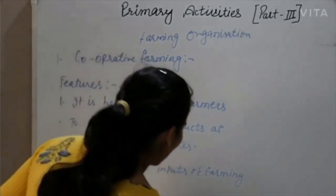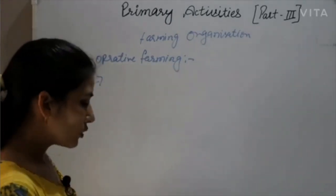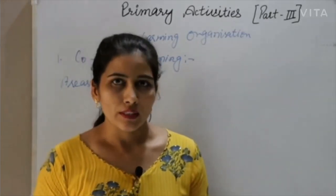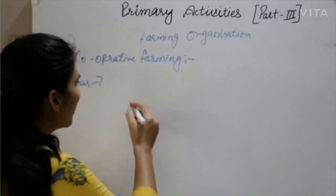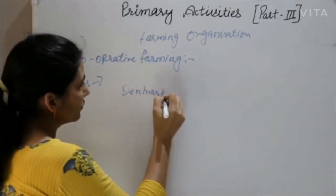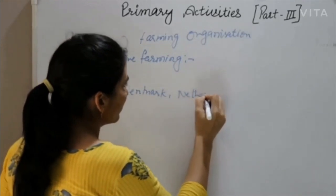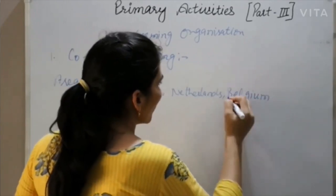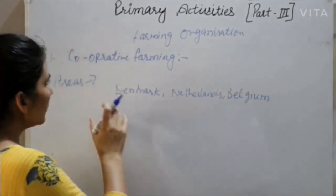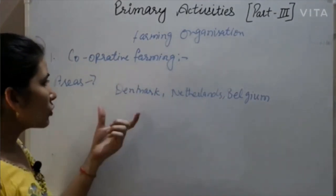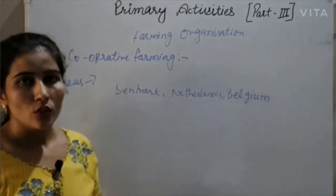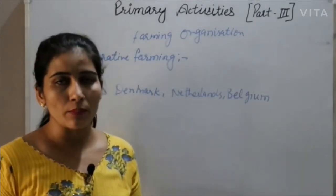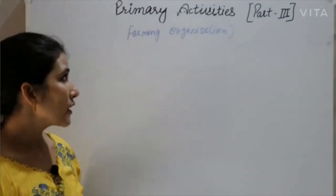The areas of cooperative farming include some European countries where it has been successfully practiced, like Denmark, Netherlands, and Belgium. In Denmark, the cooperative movement has been so successful that every farmer is a member of a cooperative society.